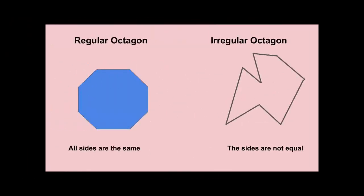Likewise, a regular octagon will have eight equal sides, while an irregular octagon may be a very strange shape. But the important aspect is that there are eight sides — eight line segments that create the octagon.